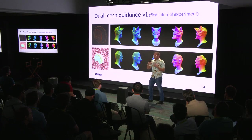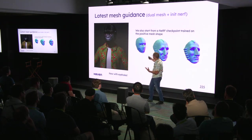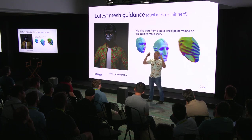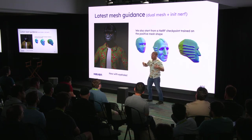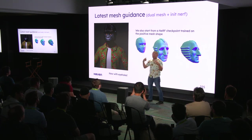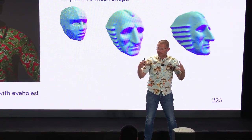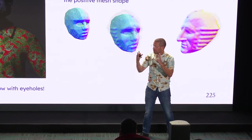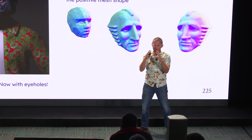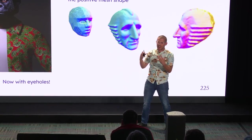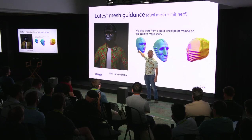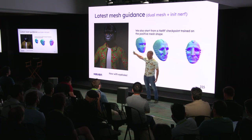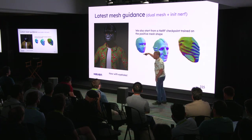We continue to iterate and this is where we're currently at — the gorilla mask now has eye holes, neck holes, fits on the head and doesn't violate the shoulders. Additionally, since we have a positive mesh for the NeRF, rather than starting as a Gaussian blob in the middle, we can start at a checkpoint that is already a NeRF of that positive mesh. This dramatically sped up the process — probably cutting off 500 to 1,000 optimization steps. You can see this in a GIF of us optimizing a George Washington mask.